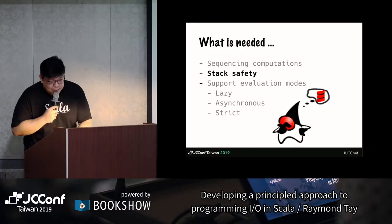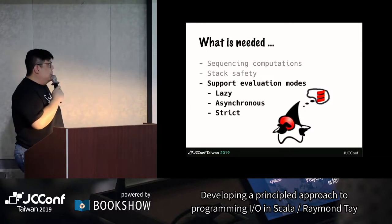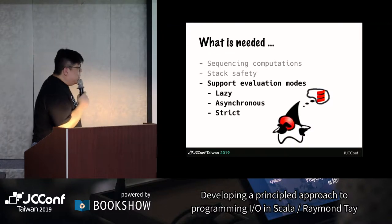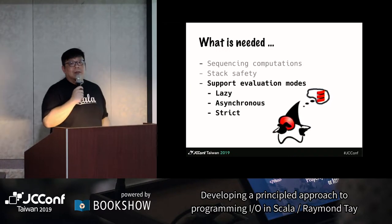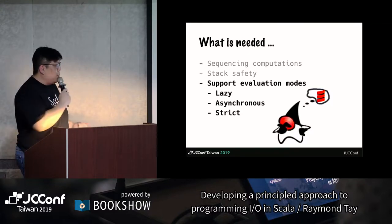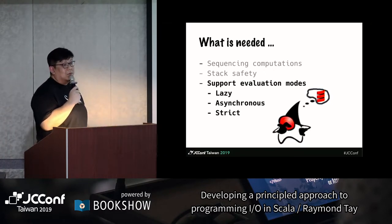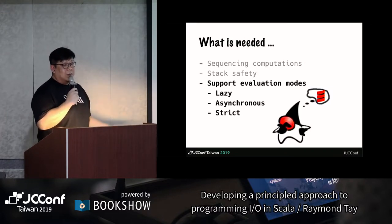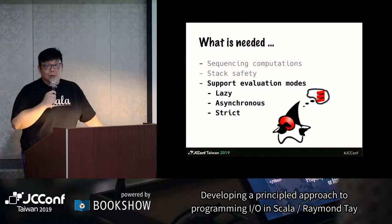The next thing we have to understand is evaluation mode. What this library tries to do is provide mechanisms for us to describe something that is lazy — in normal Scala programming, lazy would be like a thunk, a call-by-name parameter. Asynchronous: as you know, when writing Scala code you constantly need to write a lot of asynchronous code, and you need to understand how sequencing actually happens when you're writing asynchronous code. And finally, the most obvious one would be strict evaluation.